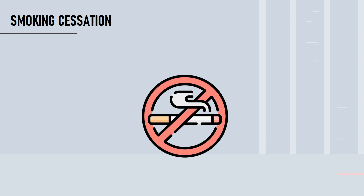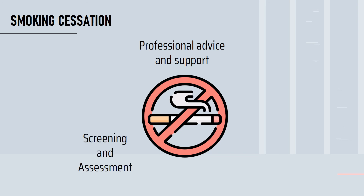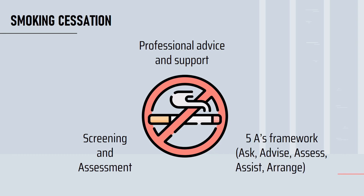While most smokers find it hard to quit smoking, community pharmacy provides smoking cessation service. Pharmacists will provide professional advice and support such as devising an effective quit plan and providing practical counseling. In the screening and assessment of customers, pharmacists will apply the 5S framework which is: ask, advise, assess, assist, and arrange. Pharmacists will be there to motivate and guide smokers to make the right decisions.